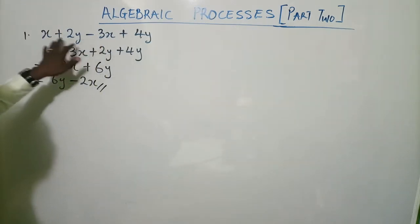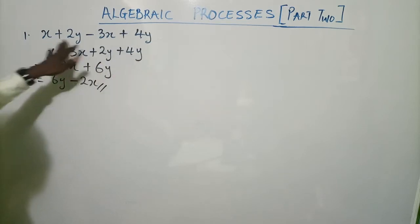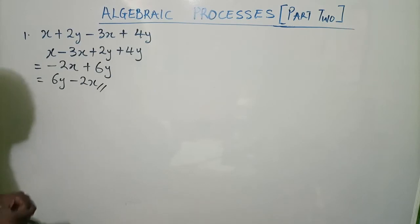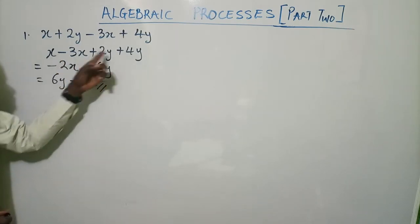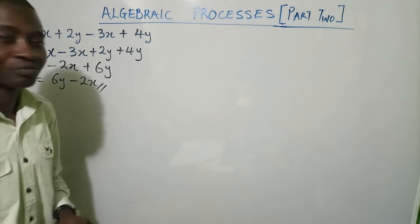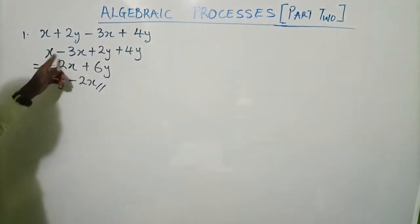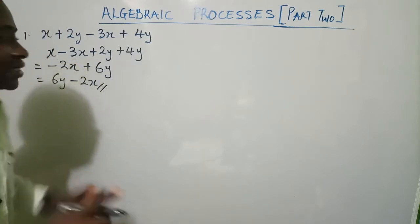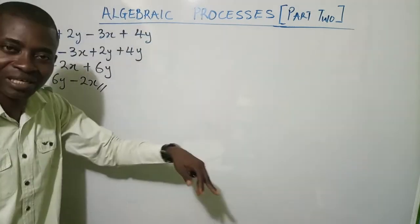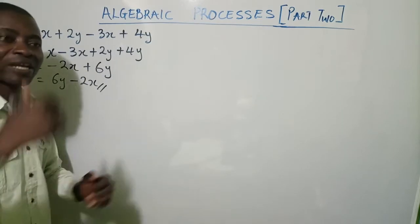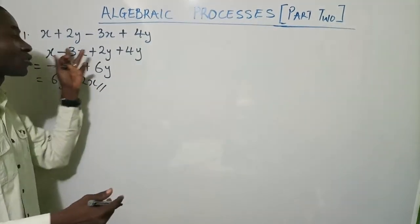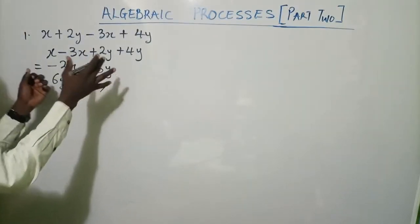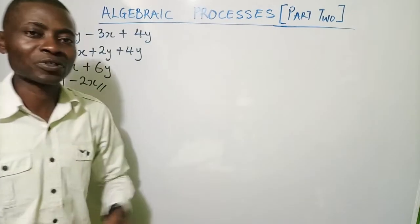So when you see 'simplify this algebraic expression,' you collect like terms, but while collecting like terms your attention should be on the sign. Someone might wonder whether the sign changes when collecting like terms — no, not in this case. This is not an equation. Signs only change when they cross an equality sign; it is only then that plus changes to minus and minus changes to plus.